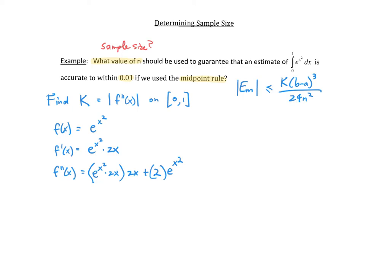I can see that I have a common factor of e to the x squared and a common factor of 2. So let me factor that out of my second derivative. I'm going to have 2 times e to the x squared. What remains is: from the first term we still have 2x's, so that's x squared, and from the second term we just have a 1. So f double prime of x equals 2e to the x squared times (2x squared plus 1).